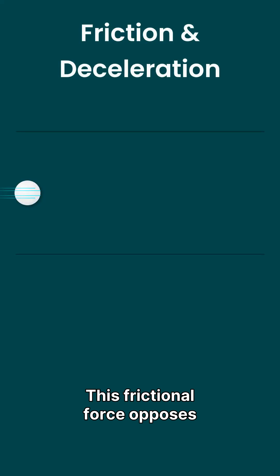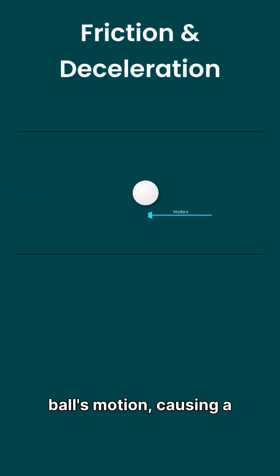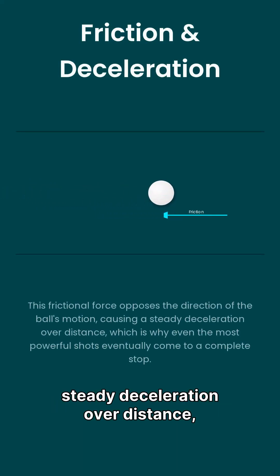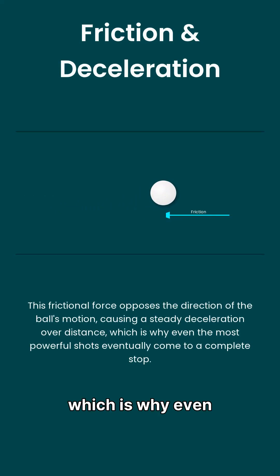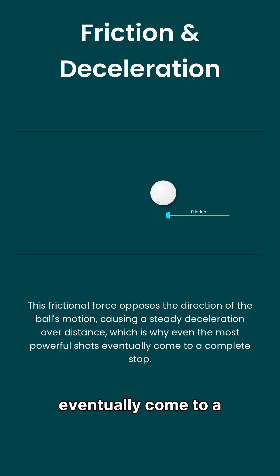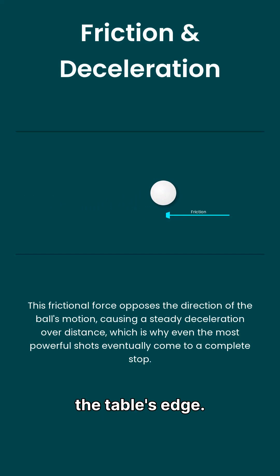The smooth felt surface of the pool table introduces friction that acts as a resistive force on the moving balls, gradually slowing them down by converting their kinetic energy into thermal energy through microscopic interactions at the contact points. This frictional force opposes the direction of the ball's motion, causing a steady deceleration over distance, which is why even the most powerful shots eventually come to a complete stop before reaching the table's edge.